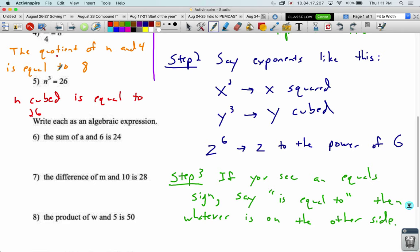Alright. Write each as an algebraic expression. The sum of a and six is 24. So we're just going to go backwards. So sum, I'm going to use a plus. These stay in the same order. a and six is. They don't say is equal to, but we know that is just means an equal sign and then a 24. a plus six equals 24.